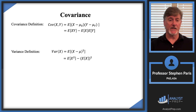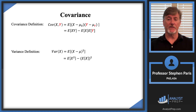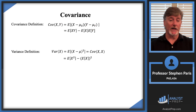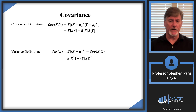One thing I want to point out is that if you replace cap Y by cap X — so you're taking the covariance of cap X with itself — then you get exactly the variance definition. In other words, the variance of cap X can be defined as the covariance of the random variable with itself. You could first define covariance between two random variables and then say the covariance of a random variable with itself is the variance.